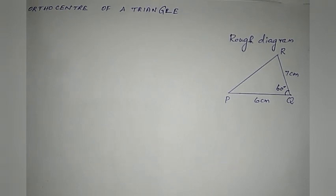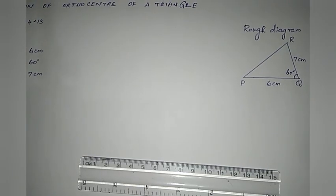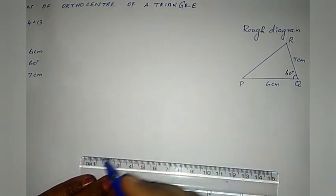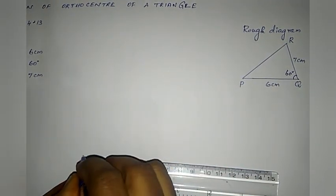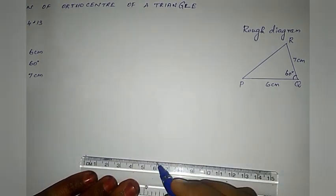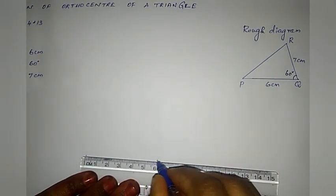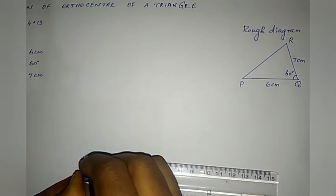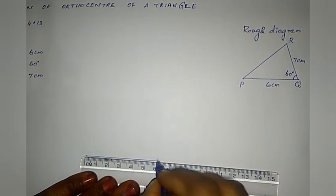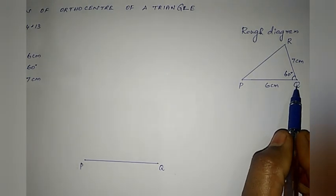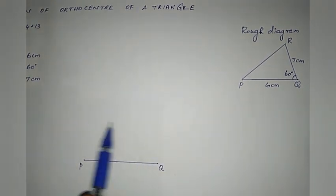We take the base side PQ and drop it. We mark P at 0 and Q at 0, then mark Q at 2.0. We take PQ as 6cm and connect PQ. So we drop the base side and mark the next measurement.